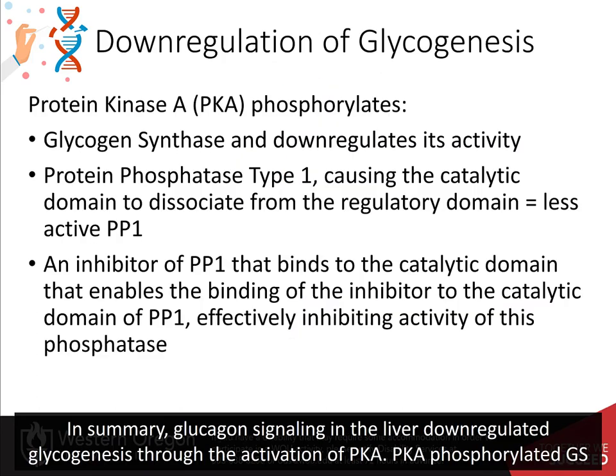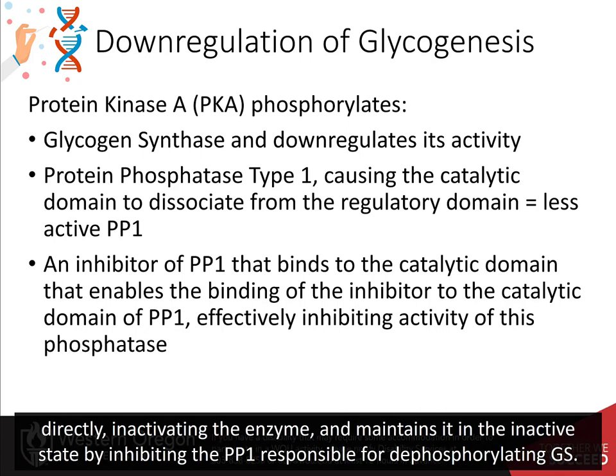In summary, glucagon signaling in the liver downregulates glycogenesis through the activation of protein kinase A. Protein kinase A phosphorylates glycogen synthase directly, inactivating the enzyme, and maintains it in the inactive state by inhibiting the protein phosphatase 1 responsible for dephosphorylating glycogen synthase.